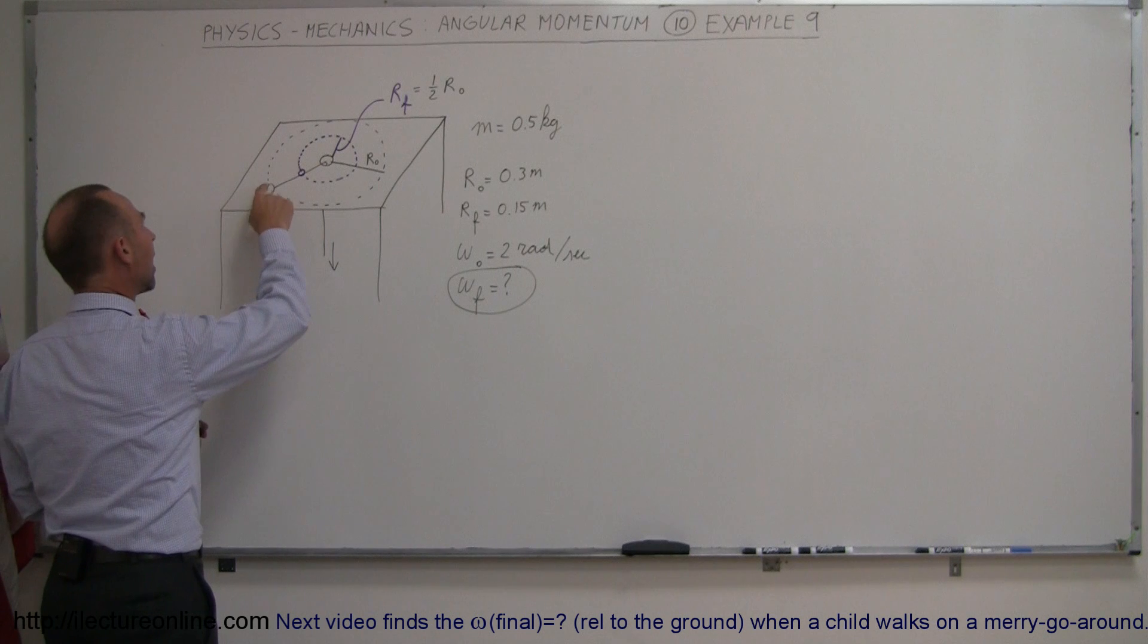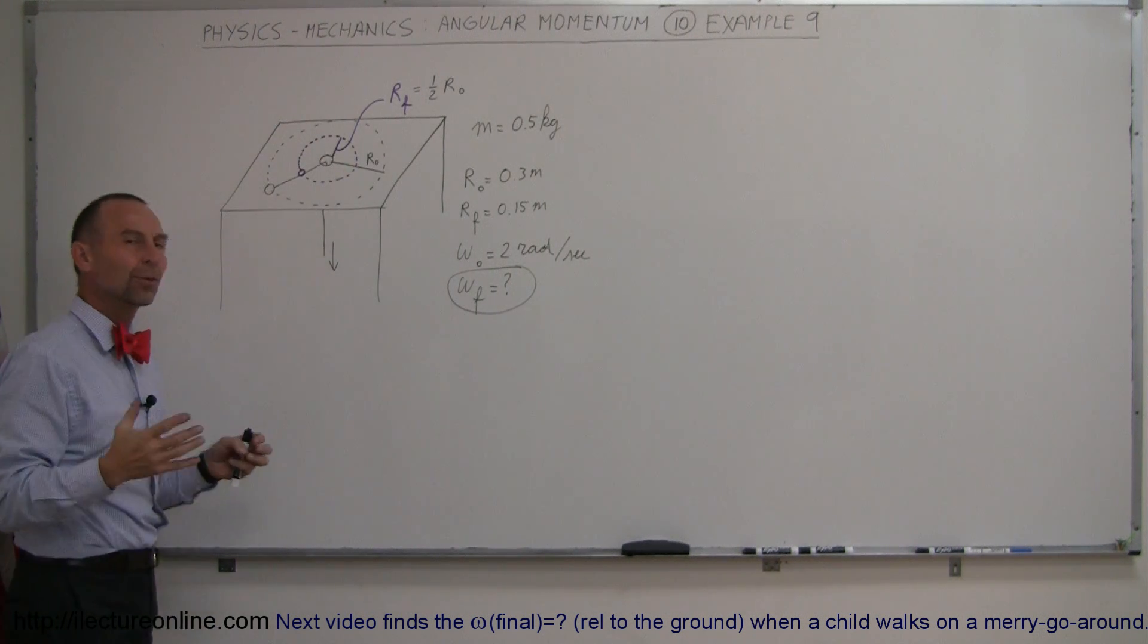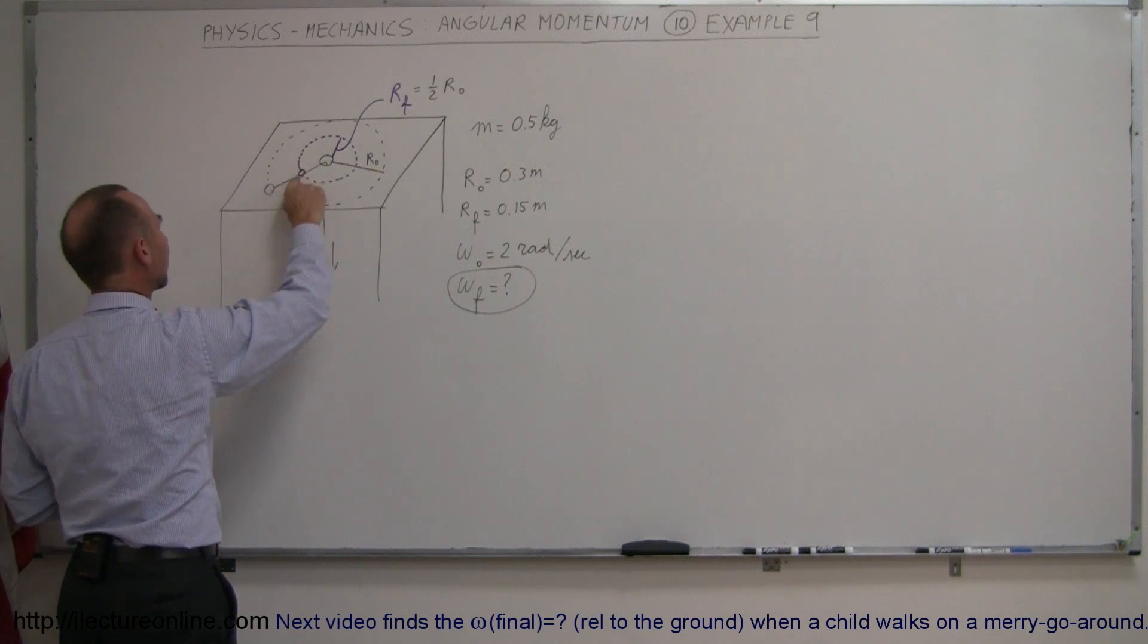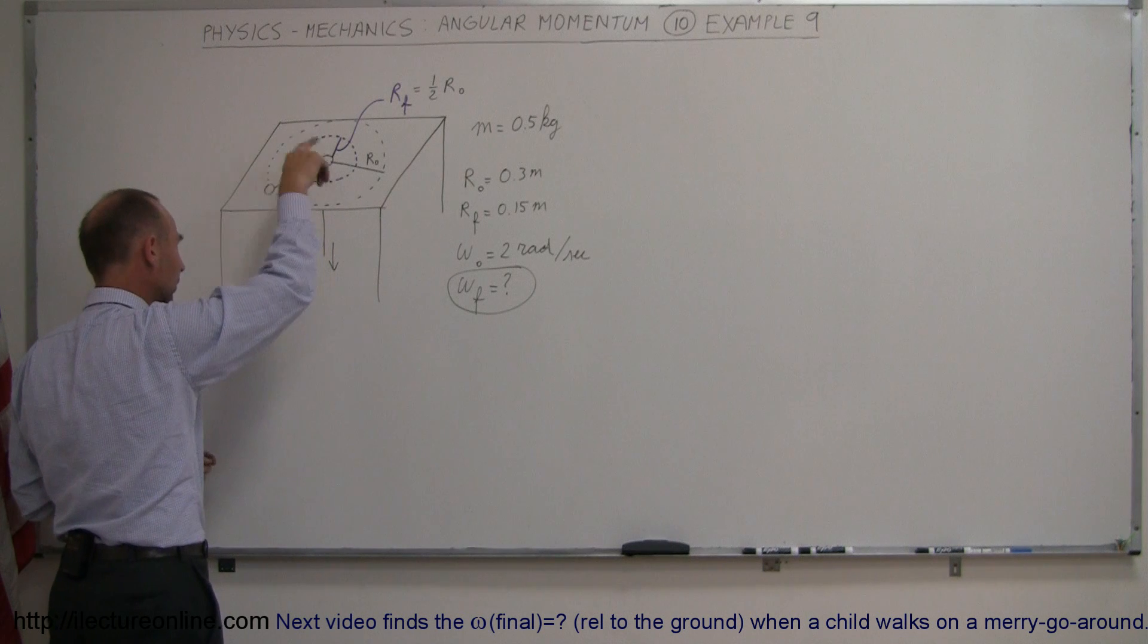Let's say that you have a hockey puck on a frictionless table, with zero resistance, and it's going around attached to a string going through a little hole and you're holding it and the puck is just going around.